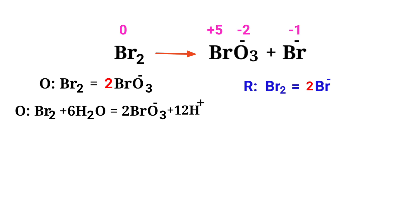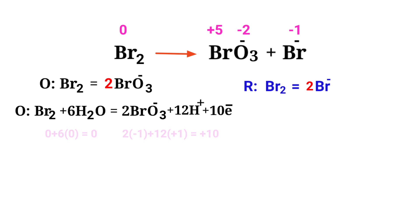For a redox reaction, the addition of charges should be equal on both sides. In the oxidation half reaction, both sides are not equal. To make them equal, you should add electrons — you cannot add protons. Adding 10 protons to the left side to make it equal to plus 10 is wrong. But you can add 10 electrons to the right side to make it equal to 0. Now the addition of charges are equaled in the oxidation half reaction.